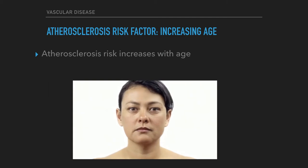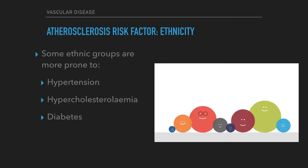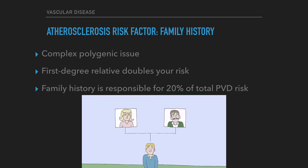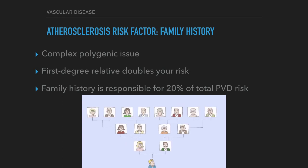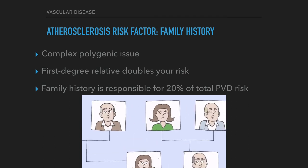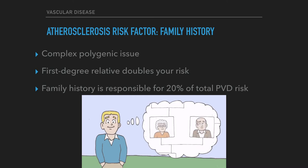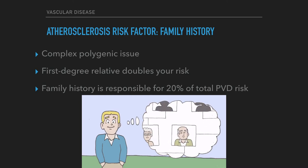There is clear evidence that atherosclerosis risk increases with age. Some ethnic groups are more prone to hypertension, hypercholesterolemia, and diabetes. Family history is almost certainly a complex polygenic issue; if you have a first-degree relative with atherosclerotic cardiovascular disease, this doubles your risk. Another study from Framingham has indicated that family history is responsible for about 20% of a patient's total peripheral vascular disease risk.